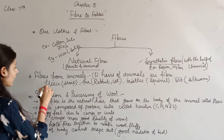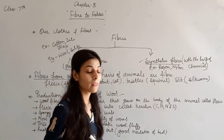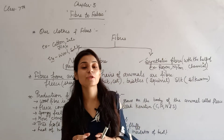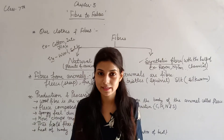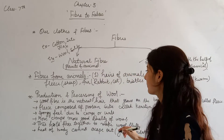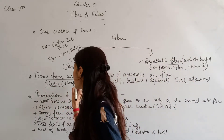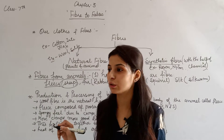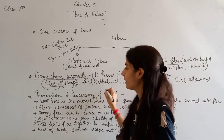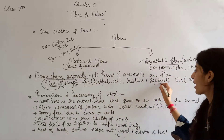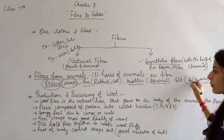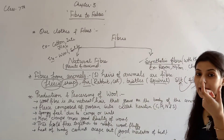The next topic is Fibers from Animals. Animal fibers are basically made from hair present on animals' bodies. For example, sheep's body hair is made into fibers. Rabbit and cat fur is also used. Silk is a fine thread obtained from silkworms.